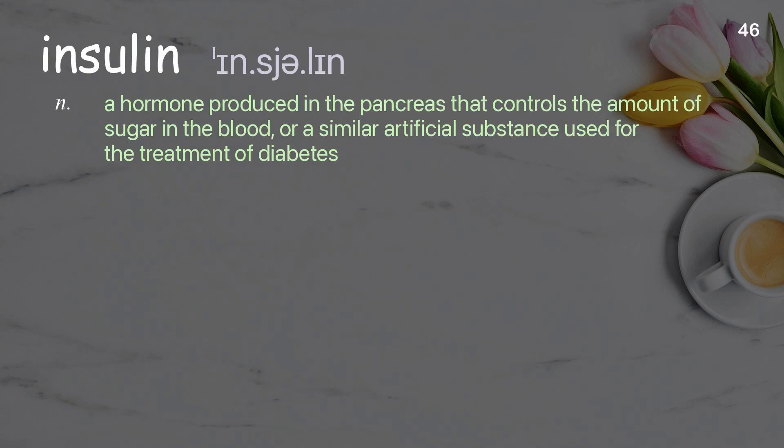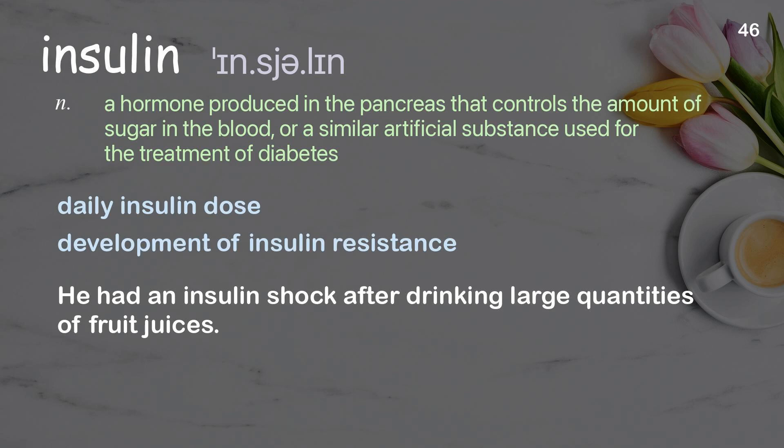Insulin. A hormone produced in the pancreas that controls the amount of sugar in the blood, or a similar artificial substance used for the treatment of diabetes. Examples: daily insulin dose, development of insulin resistance. He had an insulin shock after drinking large quantities of fruit juices.